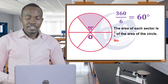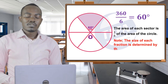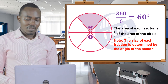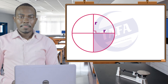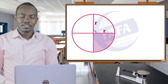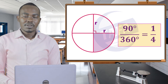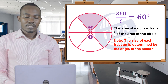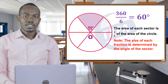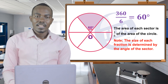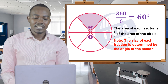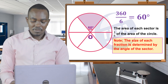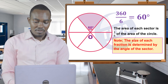The size of this fraction is determined by the angle of the sector at the center of the circle. For example, when we divided the circle into four congruent sectors, the fraction was a quarter, gotten from 90 divided by 360. In the second case, dividing into six congruent sectors, the fraction of a sixth is gotten from 60 divided by 360.